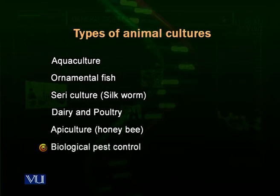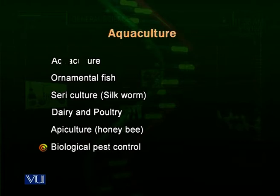We also have to deal with animals which are not good for us — the pests. Biology helps us through biological pest control, where we can control pests with the help of living organisms. Let's look at these one by one.